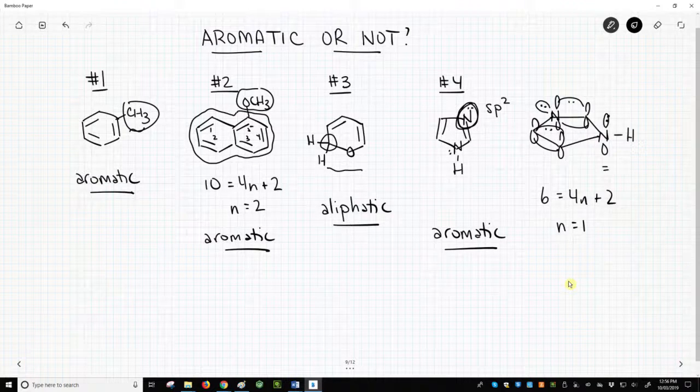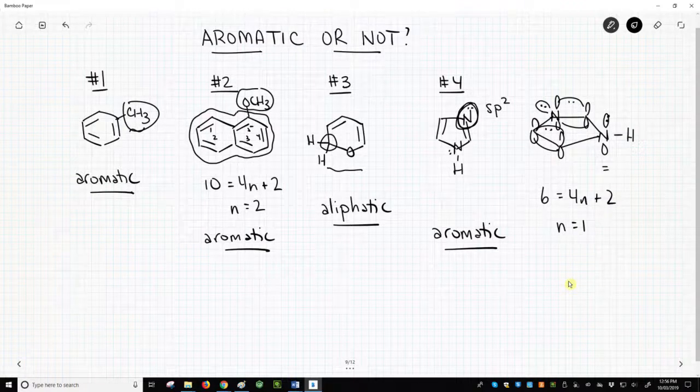There we have it. Four quick examples of applying Hückel's rules to determine whether a molecule is aromatic or aliphatic.